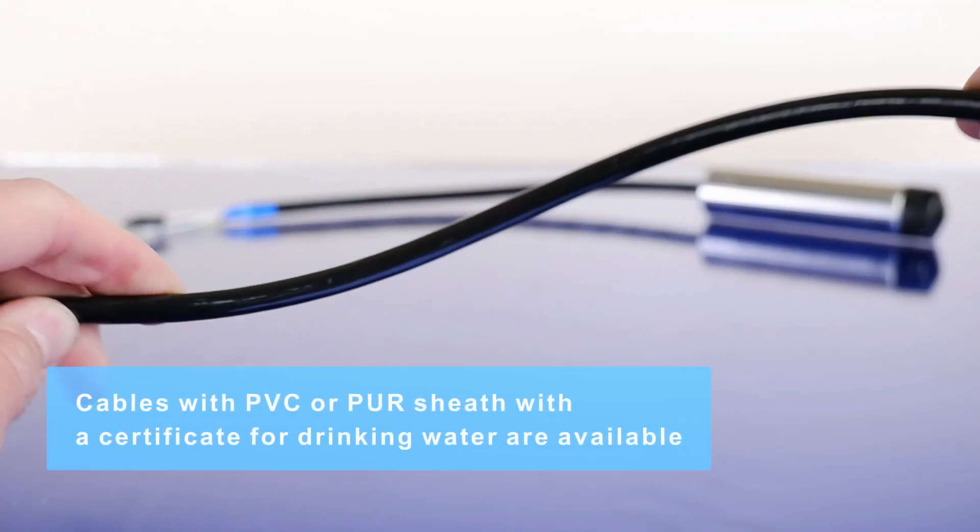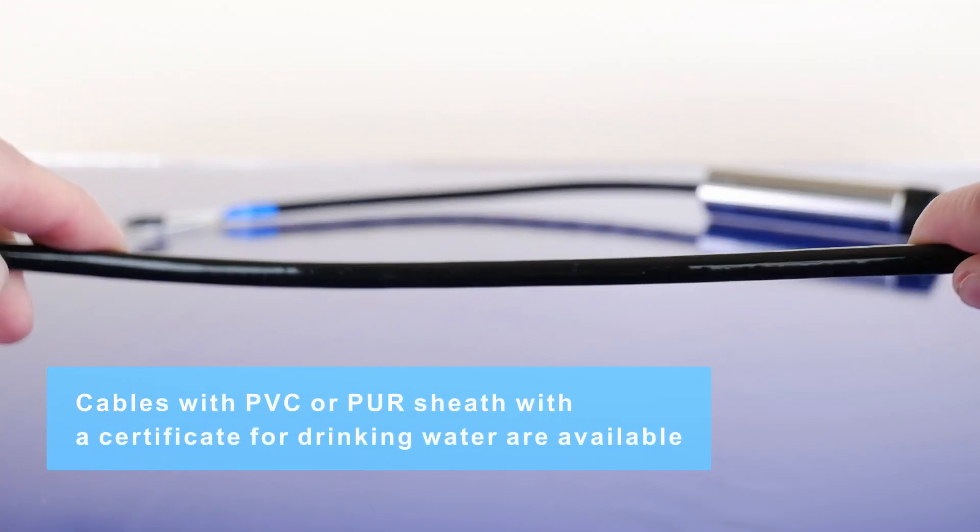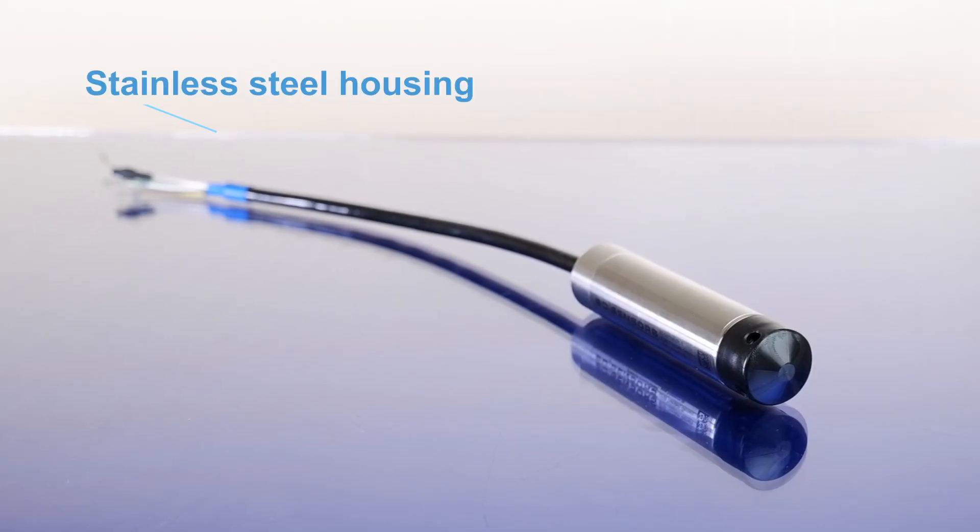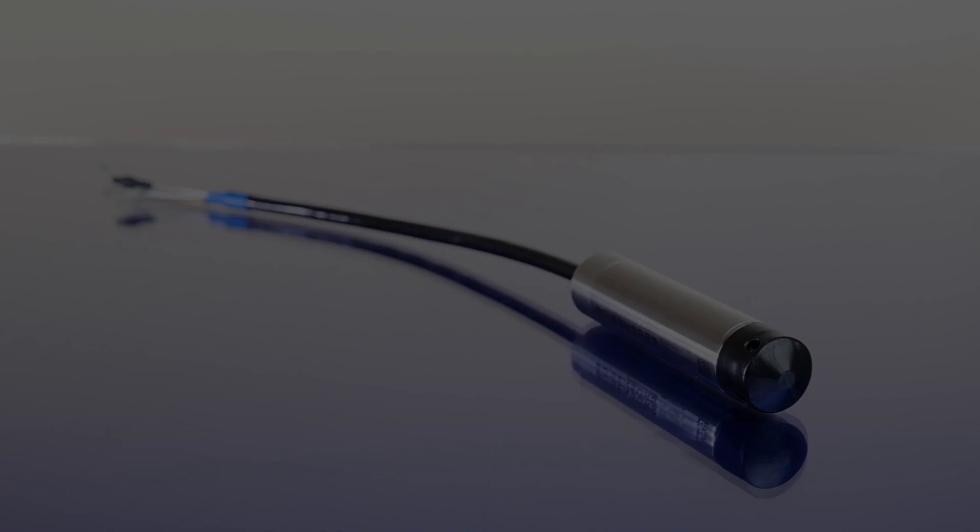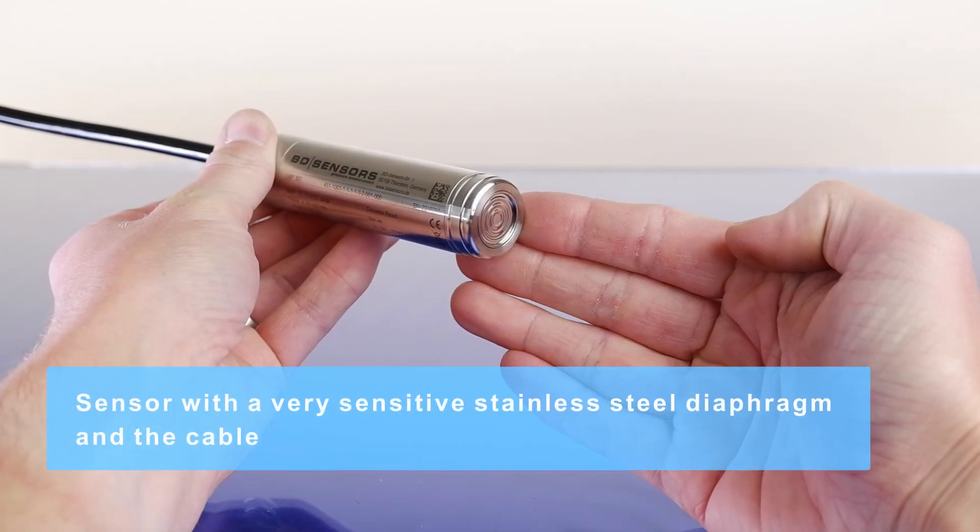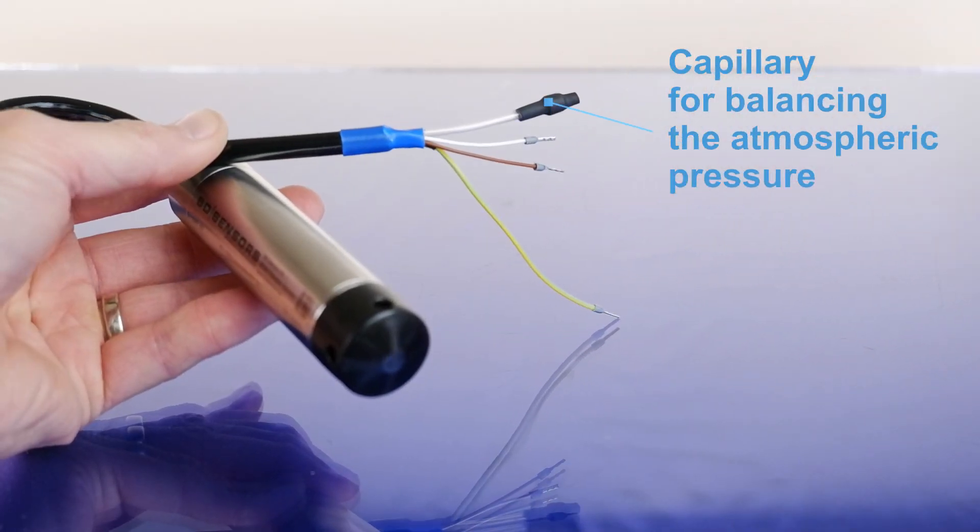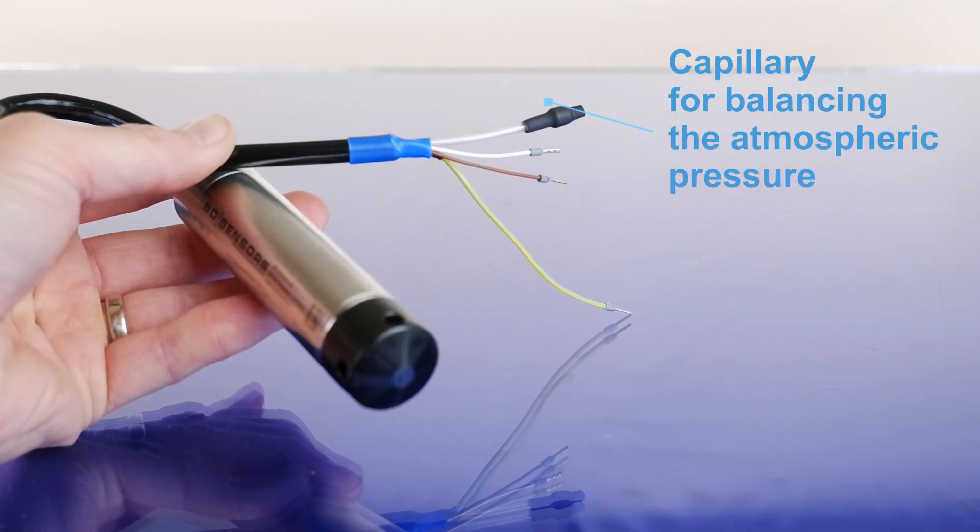Cables with PVC or PUR sheath with a certificate for drinking water are available. The probe consists of a stainless steel housing, plastic cap, sensor with a very sensitive stainless steel diaphragm, and the cable. The cable includes a capillary for balancing the atmospheric pressure.